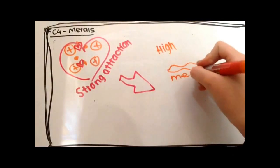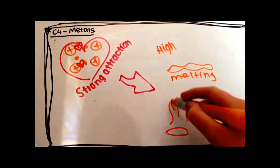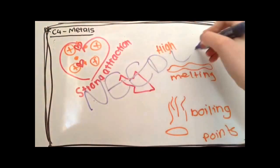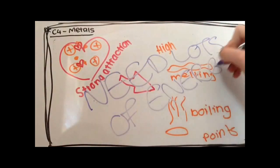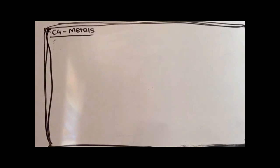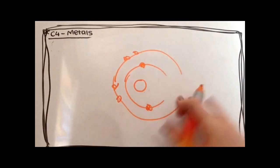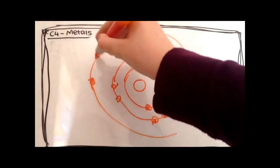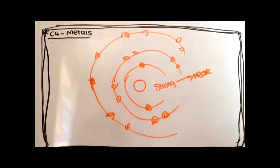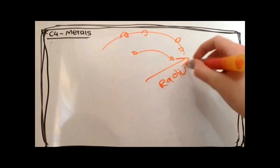Metals have high boiling points and melting points because of these strong metallic bonds, and this is because you need a lot of energy to break them apart. The strength of a metallic bond and the melting point decreases as the atomic radius increases — so an atom with a smaller radius has a stronger bond.